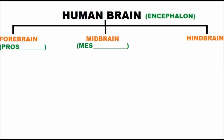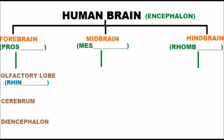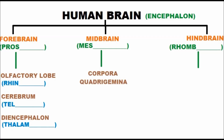Forebrain is also called prosencephalon, midbrain is called mesencephalon, and hindbrain is called rhombencephalon. Forebrain is divided into three parts: olfactory lobes, cerebrum, and diencephalon. Midbrain is divided into two parts: corpora quadrigemina and crura cerebri, also called colliculi and cerebral peduncle respectively.